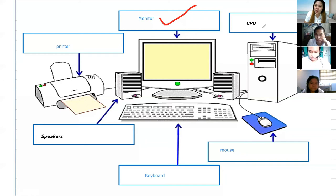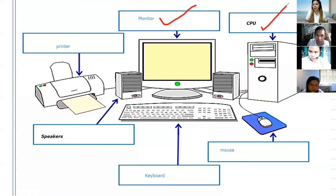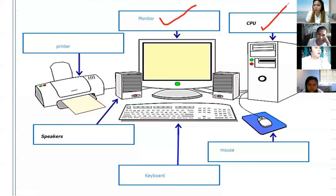How about the CPU, Alfrancis? What do you think is the use of the CPU? Human brain. CPU is the brain of the computer. Very good. So CPU is like the brain of the computer — it is the central processing unit. Whatever takes place or whatever we do in the computer, the CPU is the one who commands it.